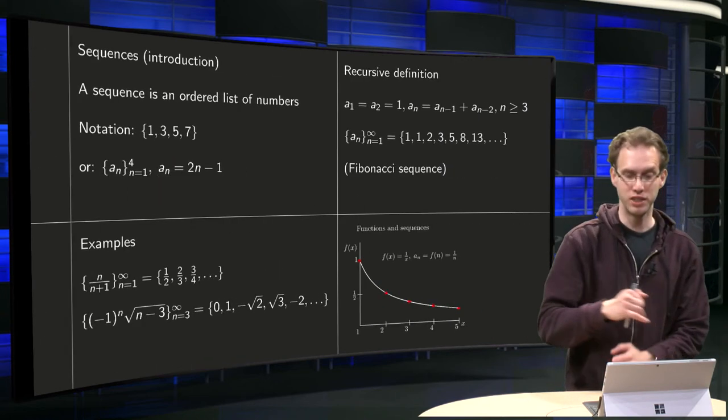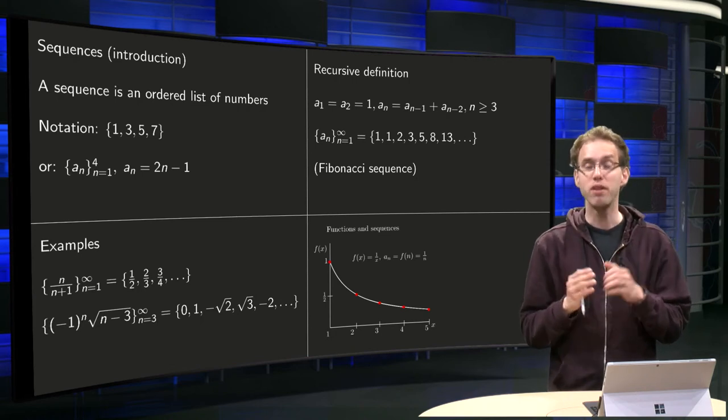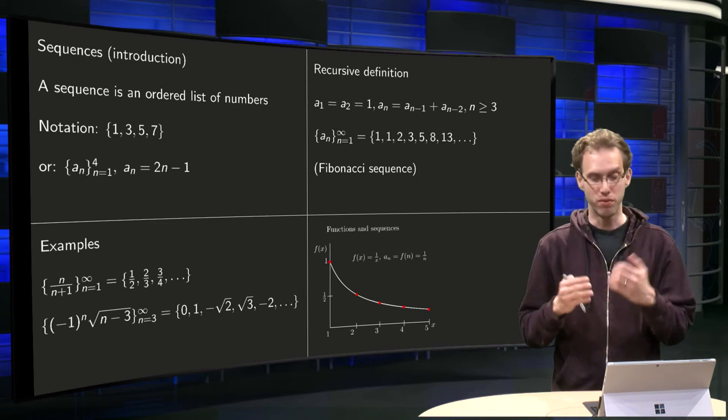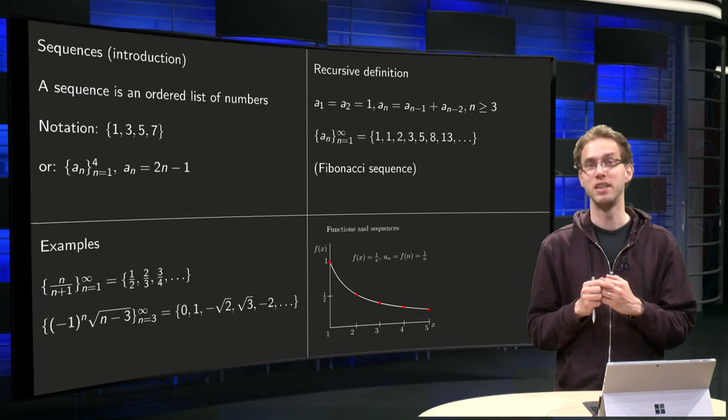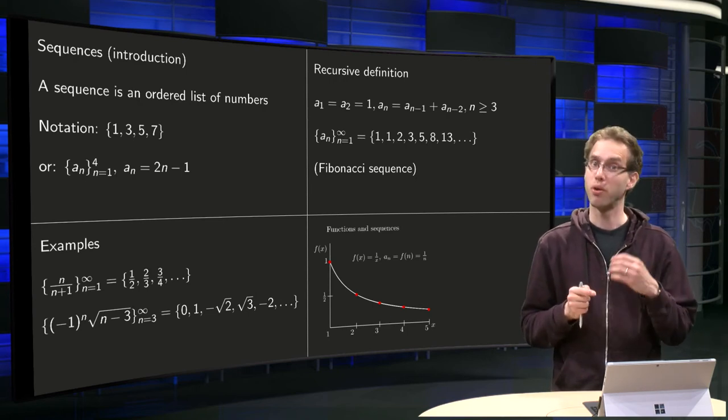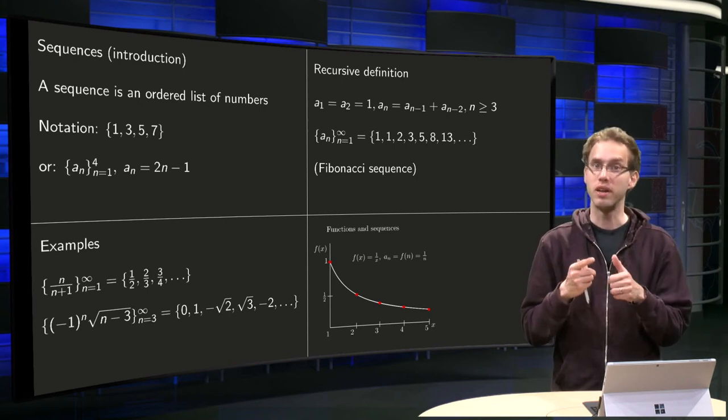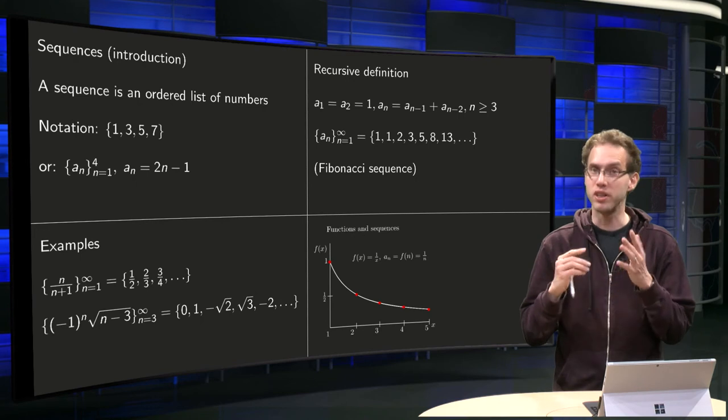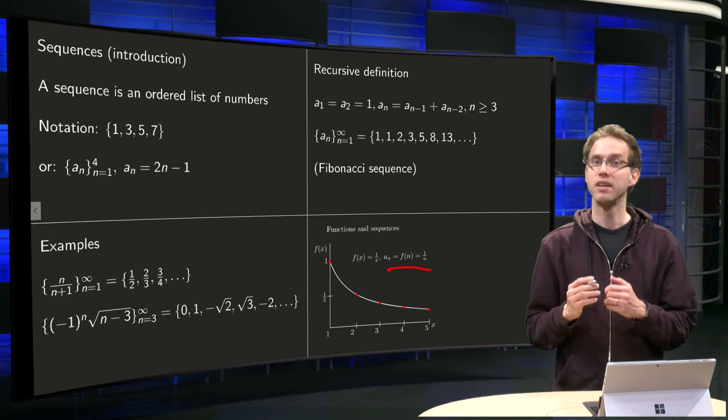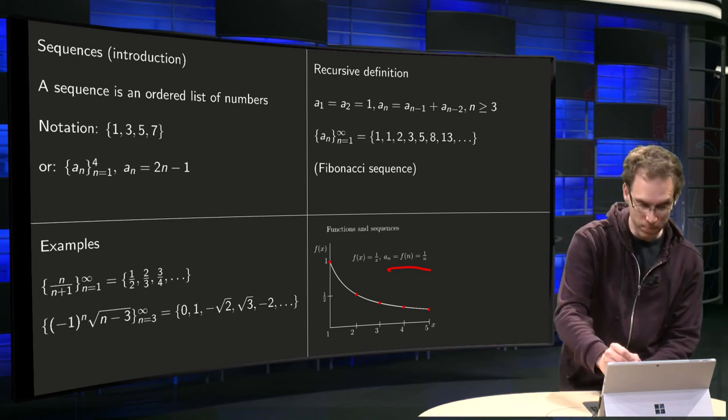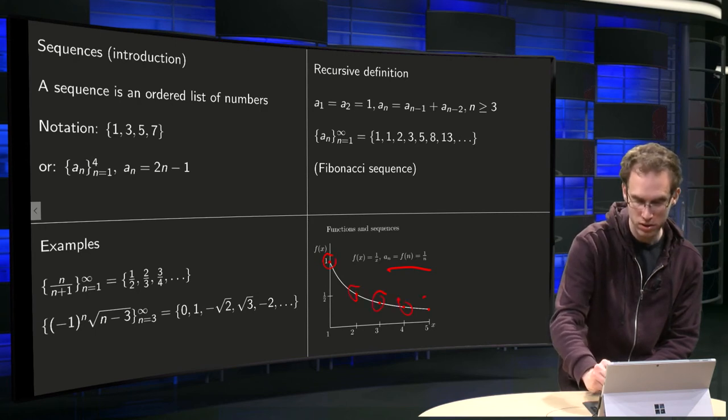So what's the relation between sequences and functions? Well, actually, functions f(x) contain much more information than sequences. For example, if we have the function f(x) equals 1 over x, we can evaluate this function f on the integer values n, so we restrict the f to only 1, 2, 3, 4, etc., and so if you call that a_n equals f(n), then here we have the elements of our sequence.